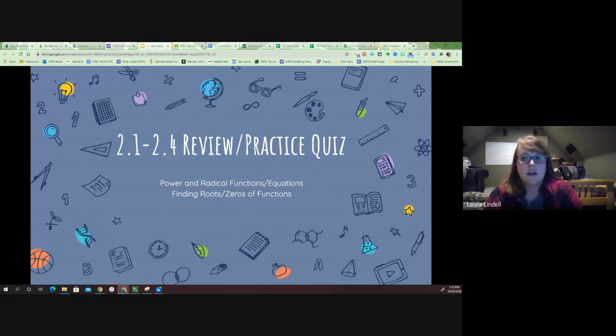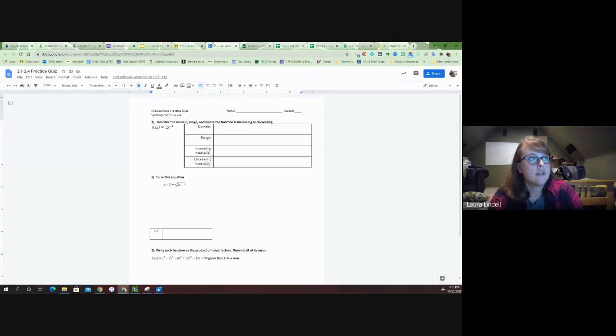Alright, so here we go with our practice quiz. Looking at the first question, we have 2x to the negative fourth power. We want to find the domain, the range, intervals of increase, and intervals of decrease.